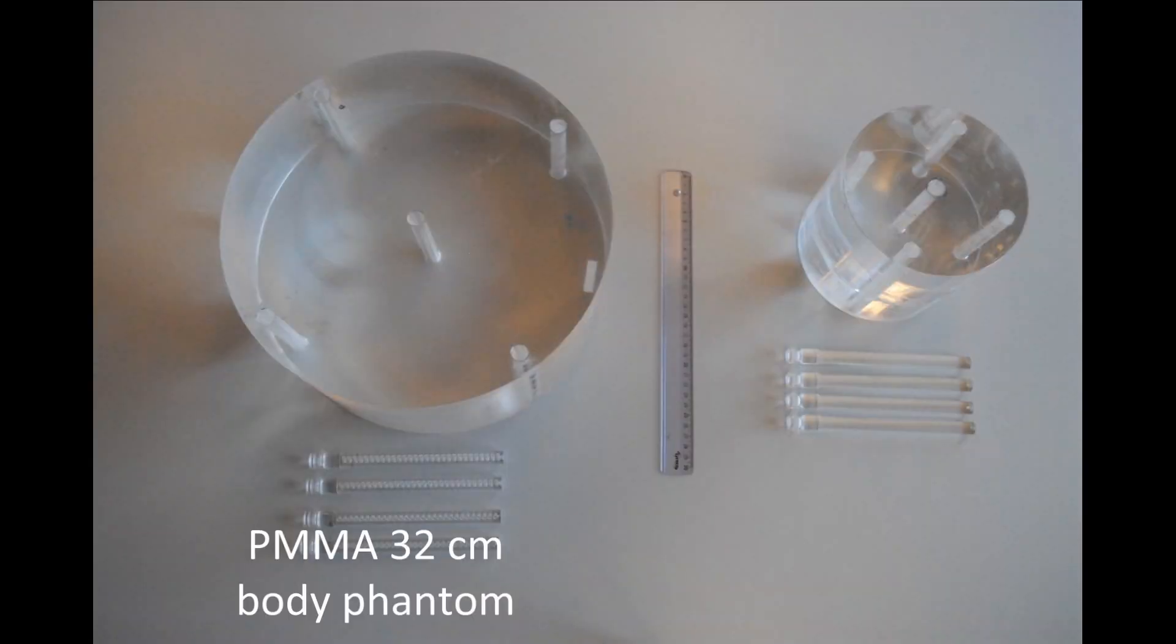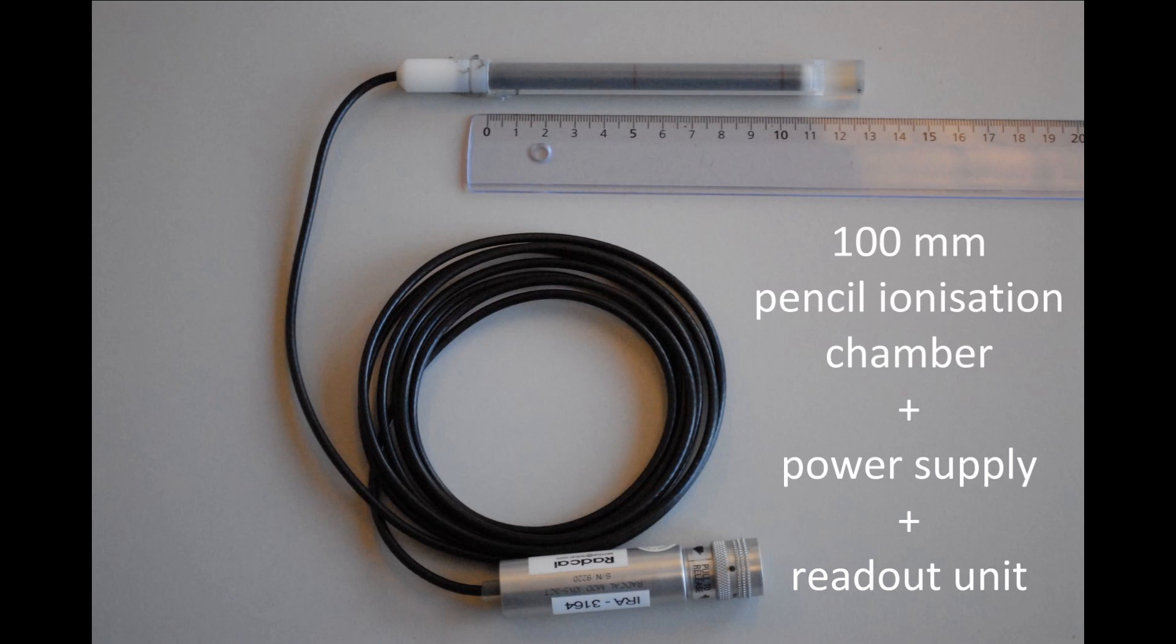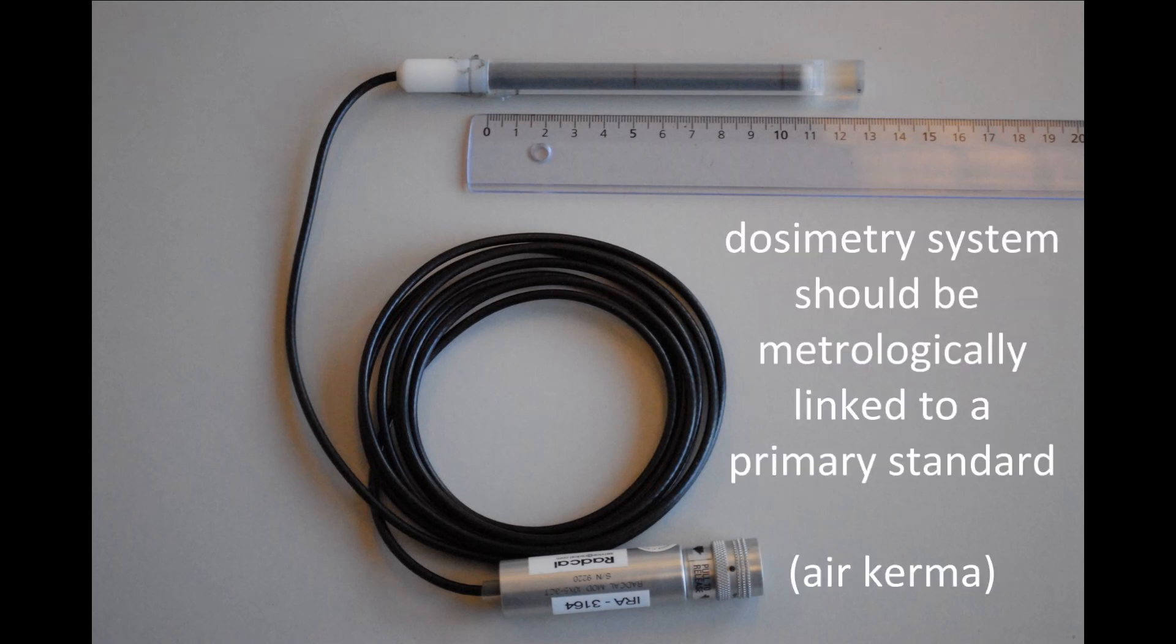You will need a 32 centimeter diameter PMMA body phantom and a 16 centimeter diameter PMMA head phantom. You will also need a 100 millimeter pencil ionization chamber, its power supply and readout unit. Make sure your measurements are traceable to a primary standard.